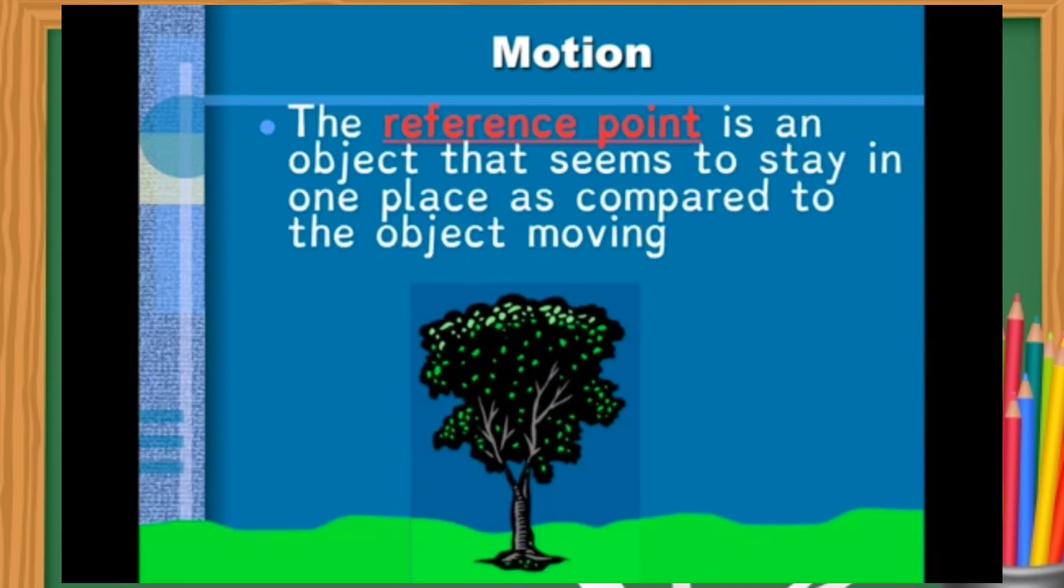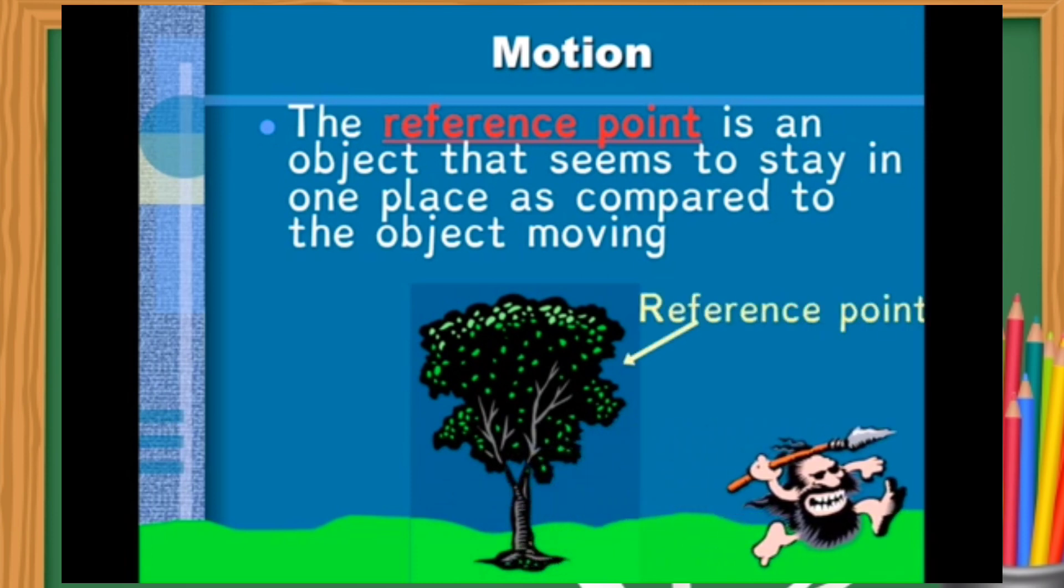The reference point is an object that seems to stay in one place as compared to the object moving. Our tree is not going anywhere, but it lets us see that the man is moving. In this case, our tree is the reference point, which shows us that the man is experiencing motion.